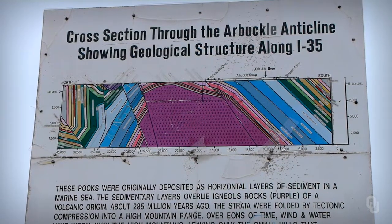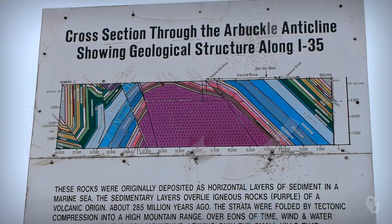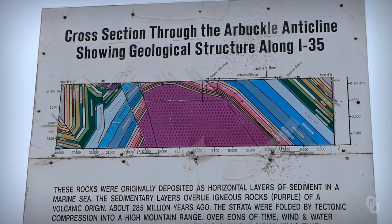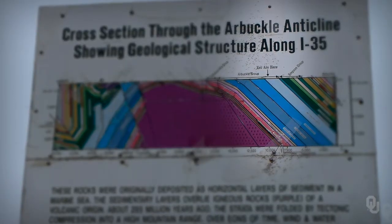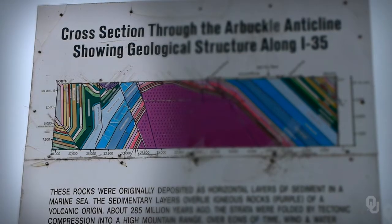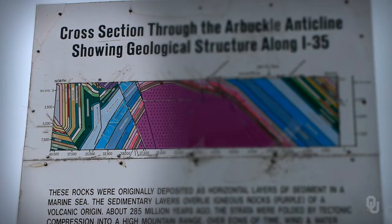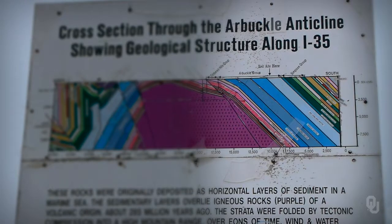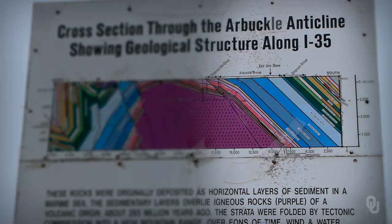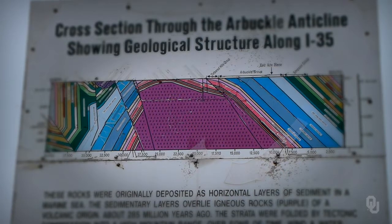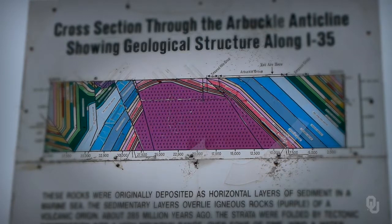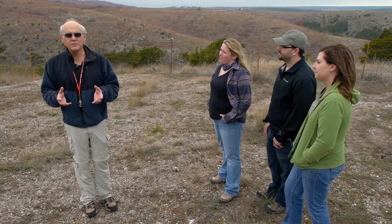If you look at this cross section, you can see this is a cross section of the Arbuckle Mountains. We're located right here. You can see the north flank of the Arbuckle Mountains with the rocks dipping to the north, the south flank dipping to the south, and then the rocks in the center are igneous rocks that formed during the initial phases of the Oklahoma Aulacogen.